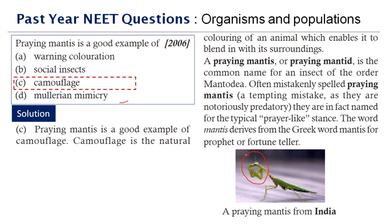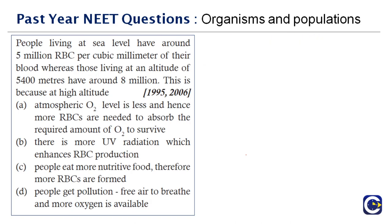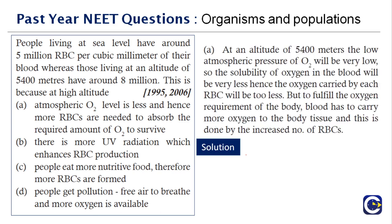Next question: people living at sea level have around 5 million RBCs per cubic millimeter of blood, whereas those living at an altitude of 5400 meters have 8 million. At 5400 meters, the atmospheric pressure of oxygen is very low, so the solubility of oxygen in blood is less. To fulfill the body's oxygen requirement, more RBCs are needed. The right answer is option A.